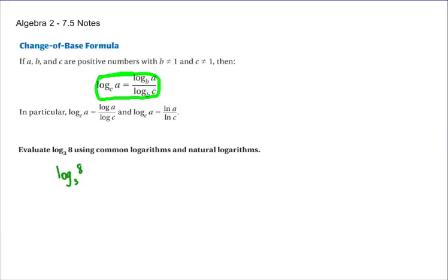To change this to a common log, you just take the log of the big number in base ten, divided by the log of the base in base ten. The big number in this case is not a ten, it's an eight. That's your change of base formula. It's not a hard formula.